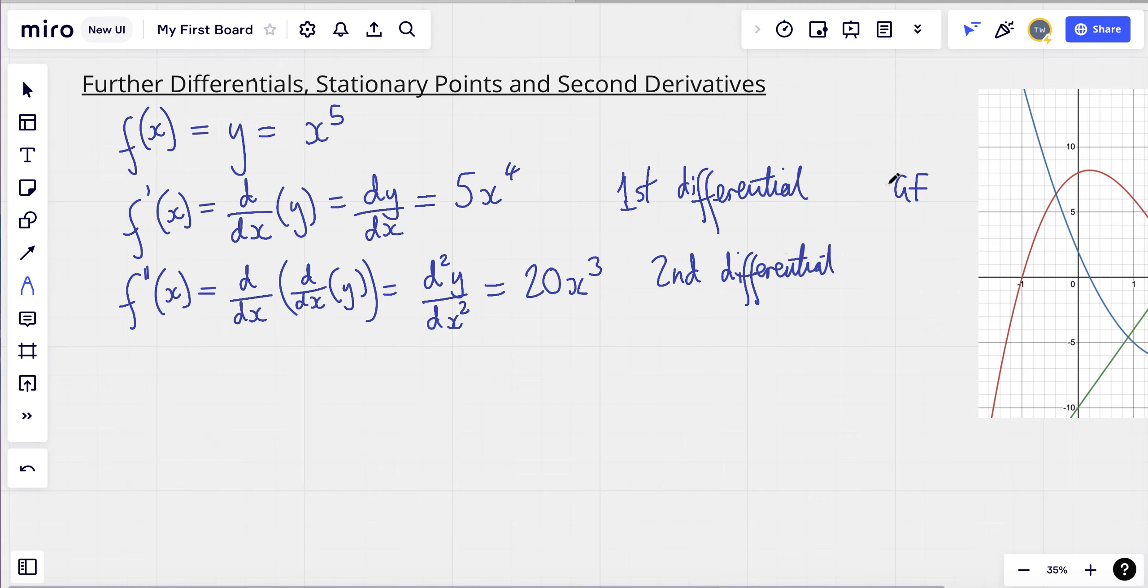So you could consider this to be the gradient of the gradient function, the rate of change of gradient. I can keep going with this. We could have f triple prime x, which would give me d by dx of d by dx of d by dx of y, or d cubed y over dx cubed. Using my power rule, 20 times 3 is 60, so 60x squared. And you can imagine I can keep going with this on and on. That's my third differential.